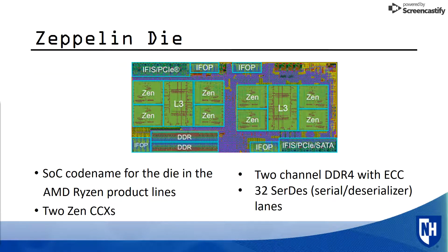The Zeppelin die is the system-on-a-chip, or SoC, codenamed for the die across all AMD Ryzen product lines. Pictured here, it is two Zen four-core complexes put together on a single die. The Zeppelin die has two channels of DDR4 with error correction, as well as 32 serializer lanes, commonly used as PCIe lanes. You can also see the four Zen cores and the L3 cache shared between them.